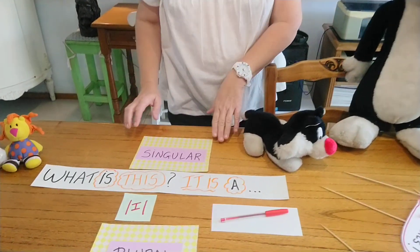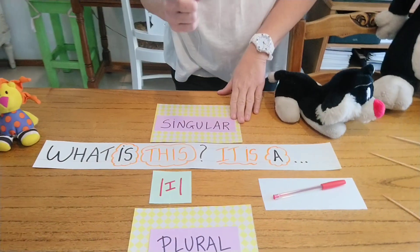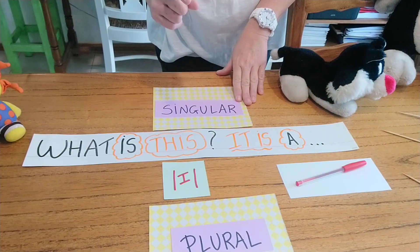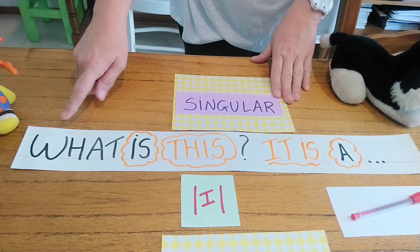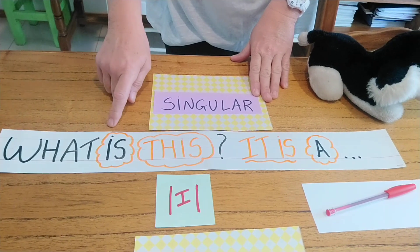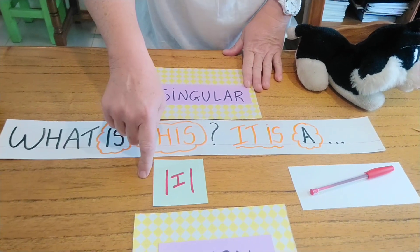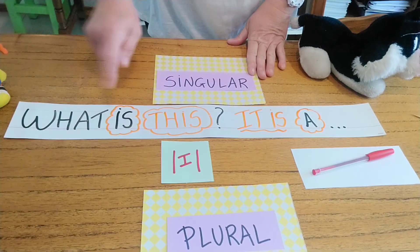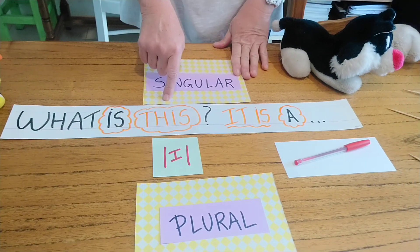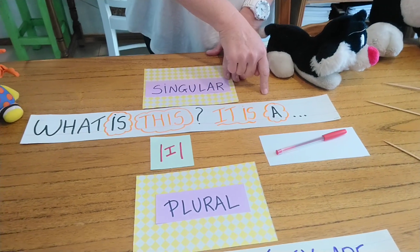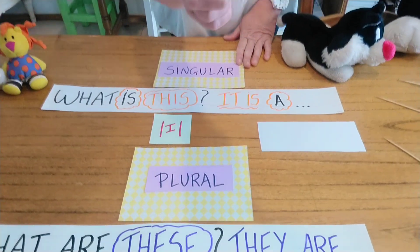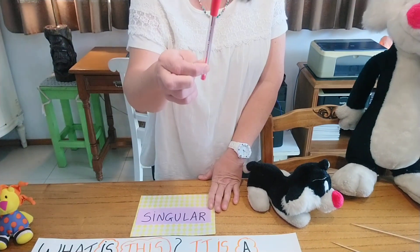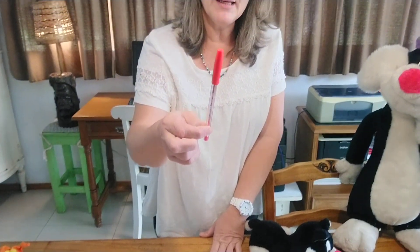If you want to ask about one object — that is singular — you need to say: 'What is this?' Short E. 'What's this?' It is a... in this case, 'What's this?' It is, or it's a pen.